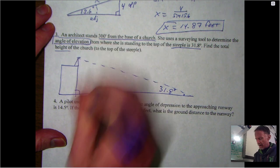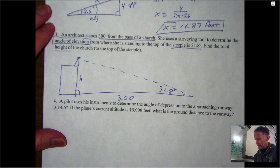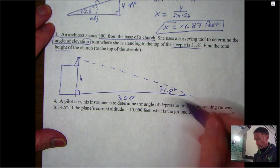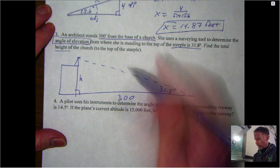So again, that angle of elevation from the ground measuring up - so that's 31.8 degrees - is right here, and then the 300 feet is just that length along the ground. Right angle, all the good stuff like that.